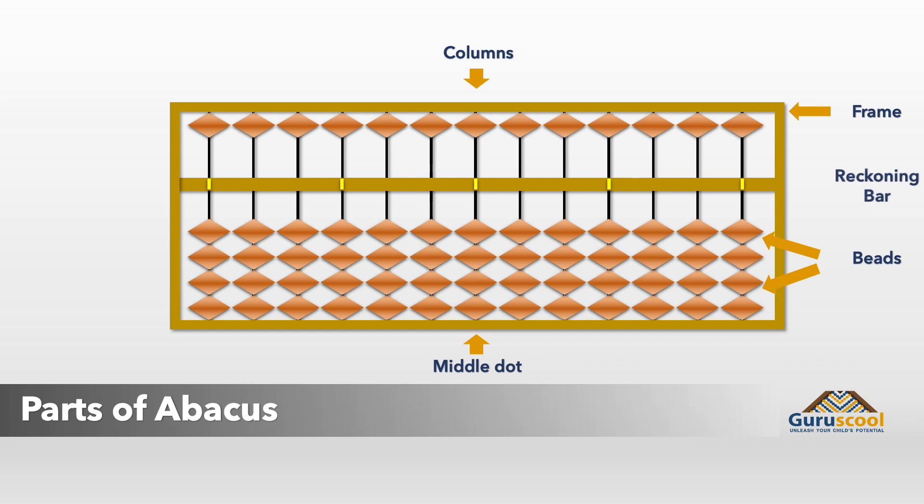The frame is divided into two rows by a bar called reckoning bar. The beads in the top row are called upper beads or heavenly beads. The beads in the bottom row are called lower beads or earthly beads.